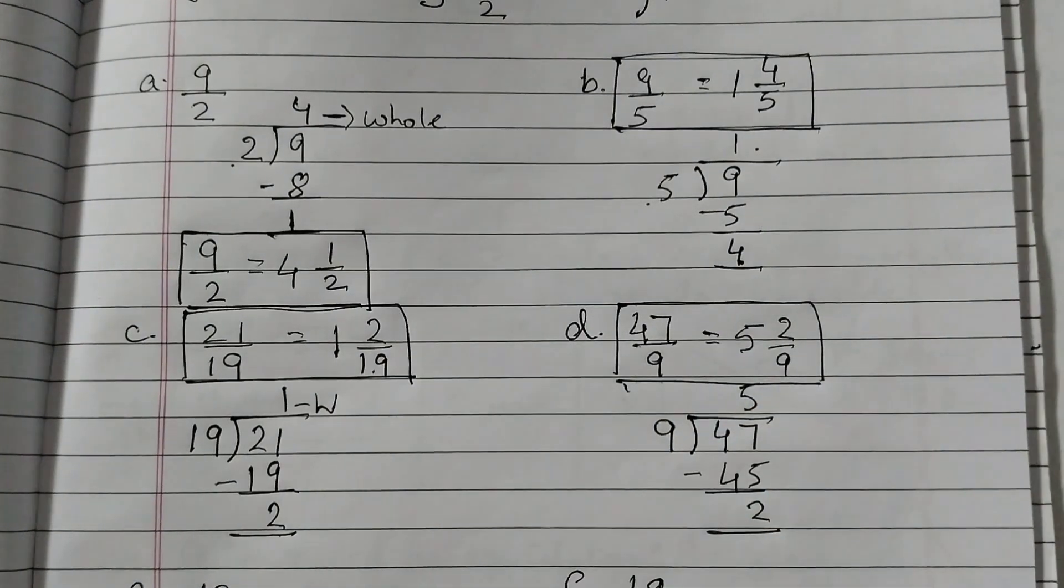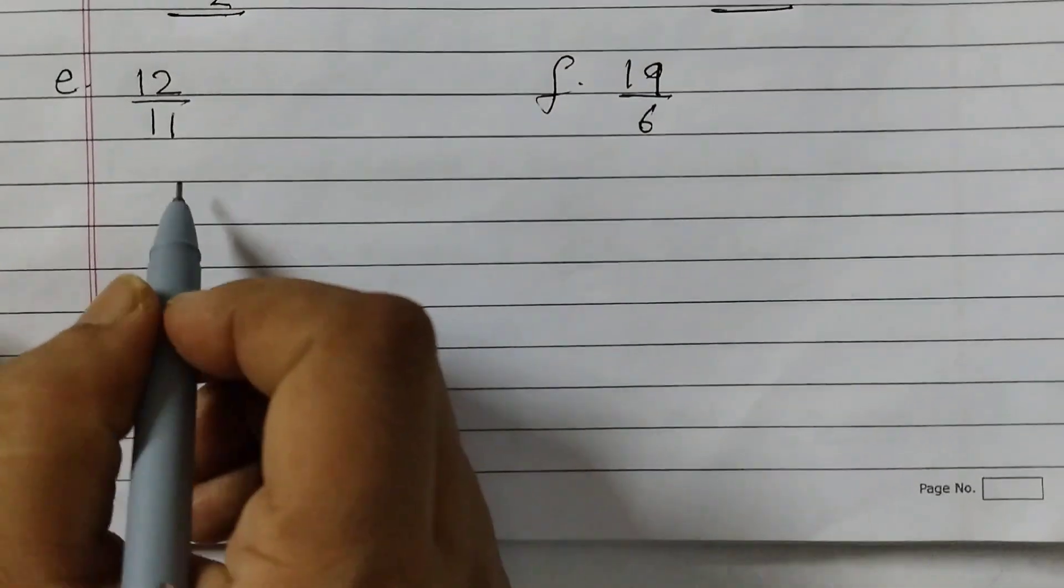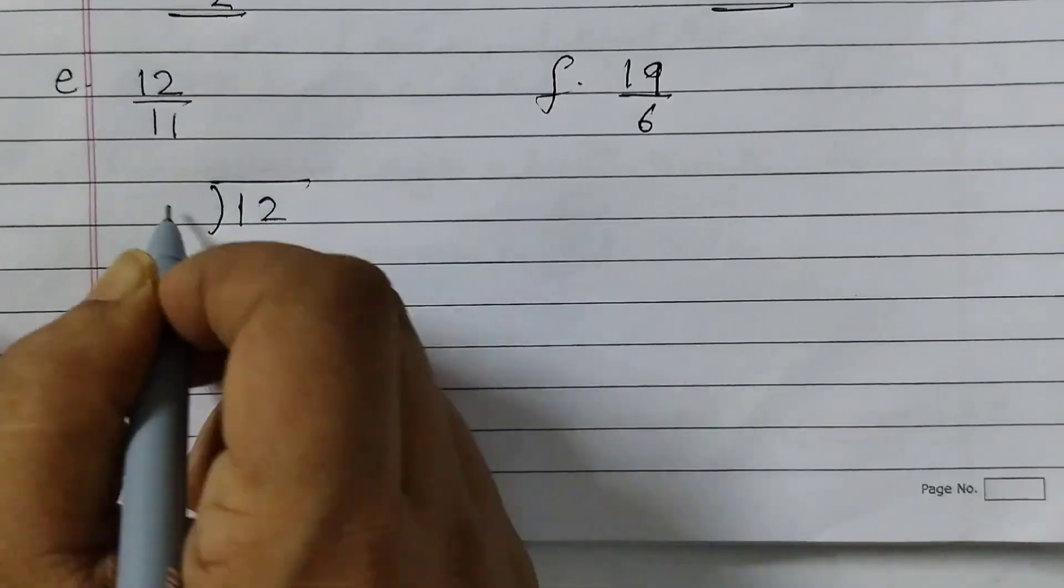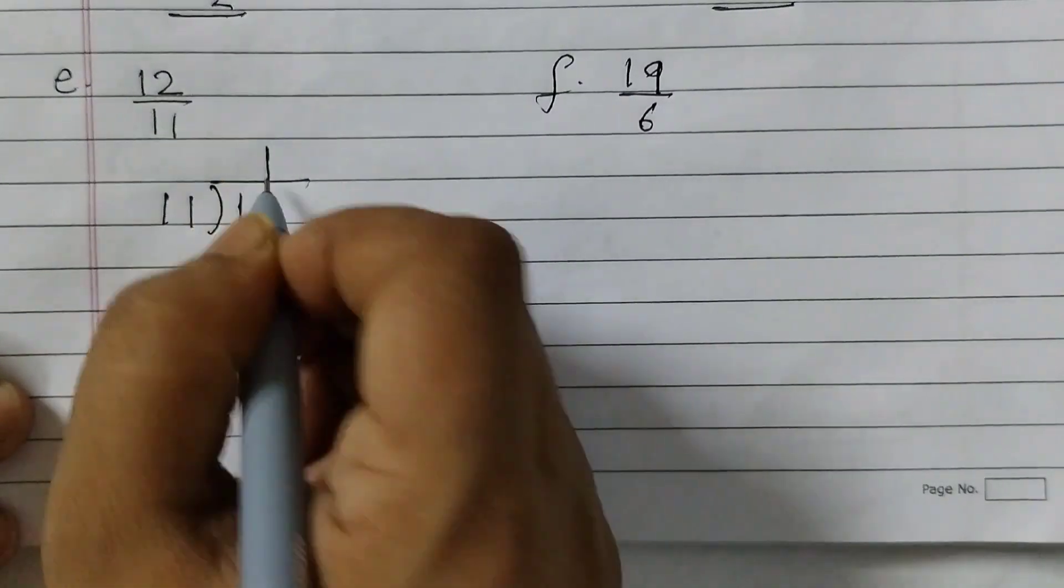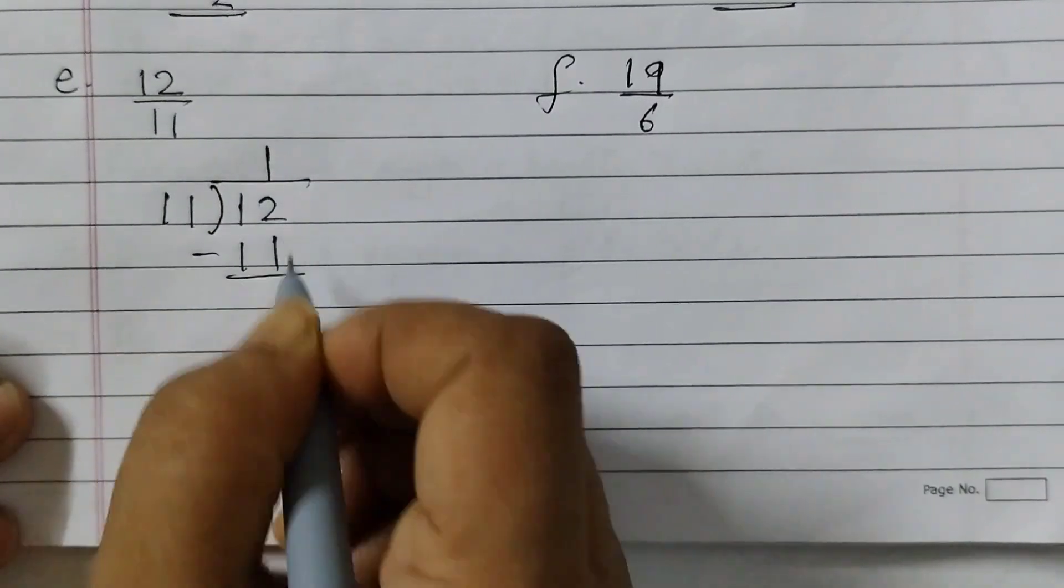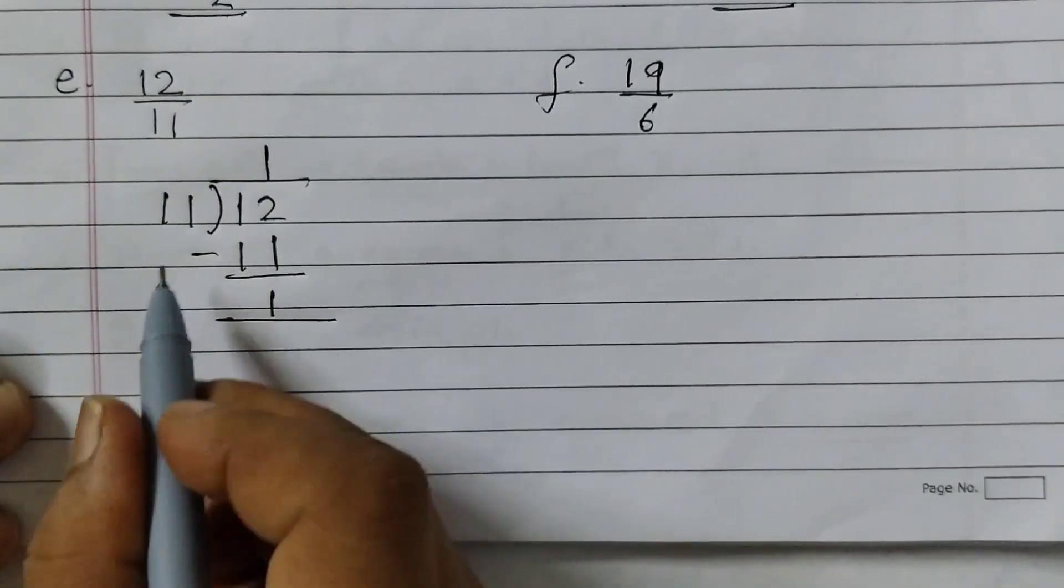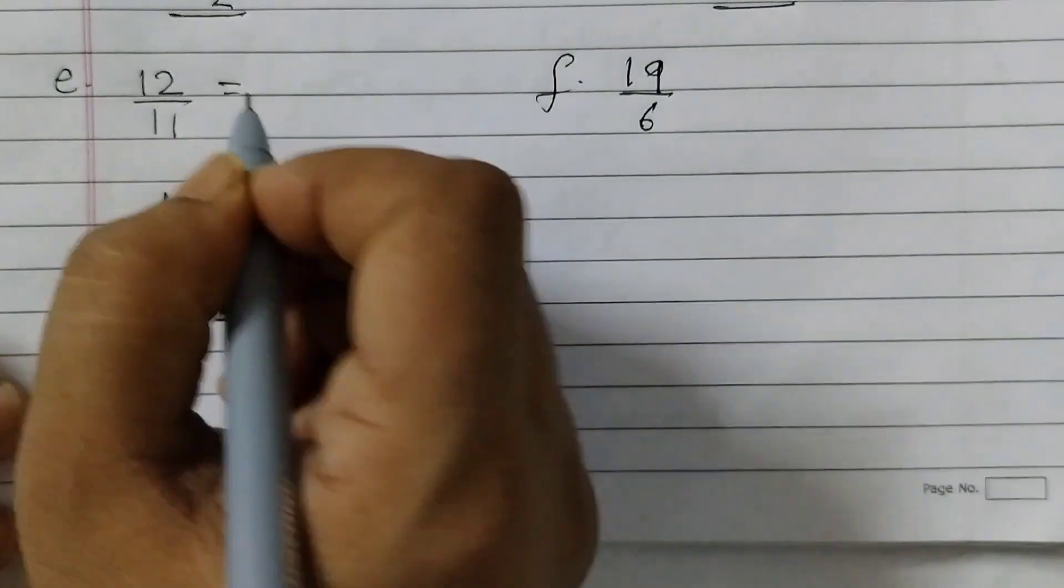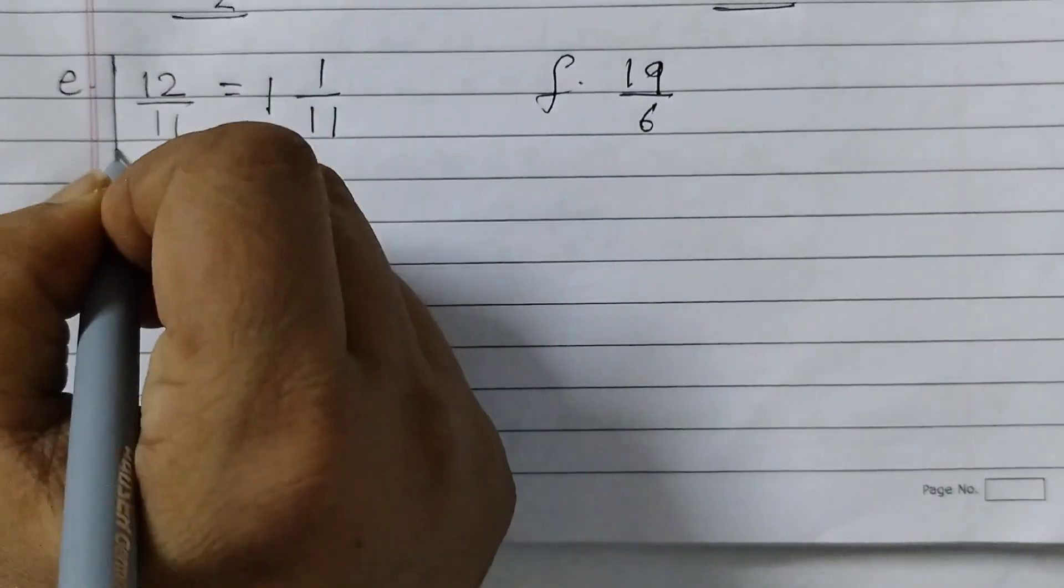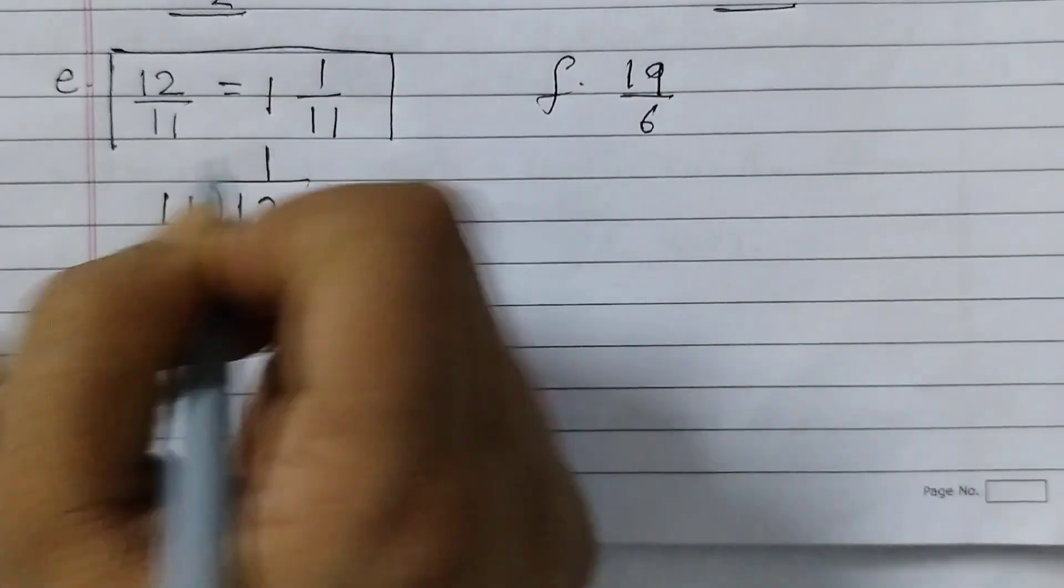Let's do the next one. 12 upon 11, so 12 divided by 11. 11 ones are 11, 12 minus 11 is 1. So 1 whole and 1 upon 11. So we will write 1 whole, 1 upon 11. This is the answer for E.